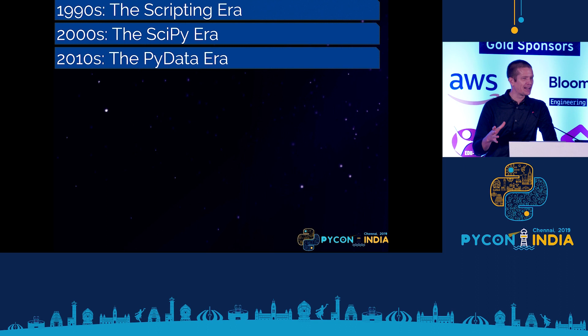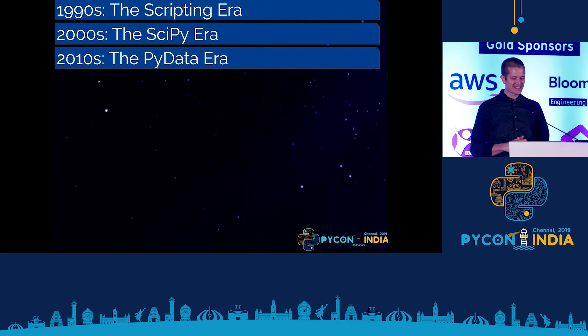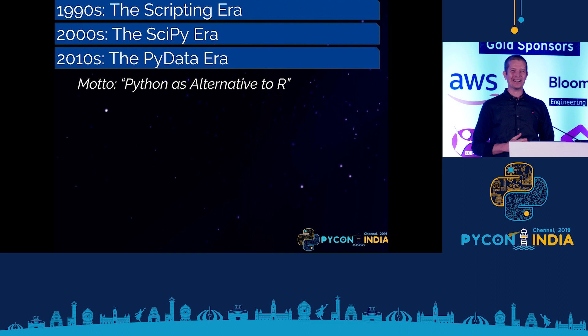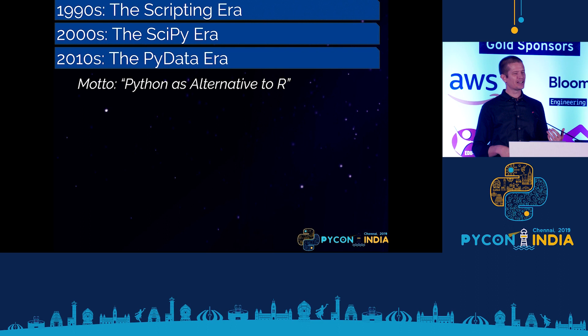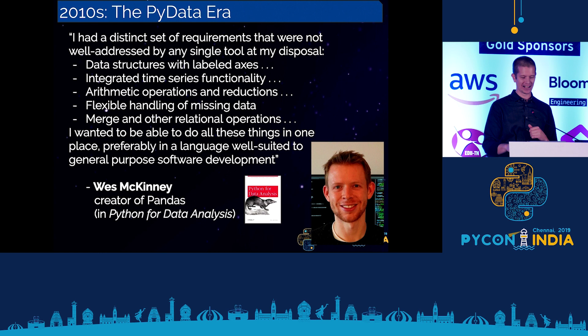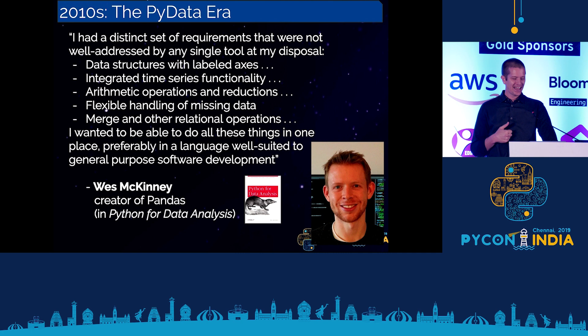So we had the scripting era — Python as an alternative to Bash. We have the SciPy era — Python as an alternative to MATLAB. And where are we in the last 10 years? I like to think of the last 10 years as the PyData era, with the motto: Python as an alternative to R. R has really developed as a powerhouse for statistical analysis, and for cleaning, analyzing, interpreting, and visualizing data. A lot of folks in the Python world wanted a Python alternative to R — they appreciated Python's beauty and syntax and didn't want to switch languages for data analysis.